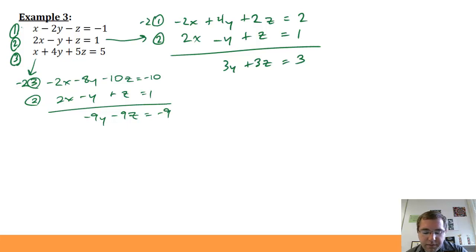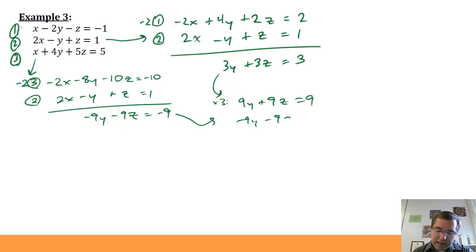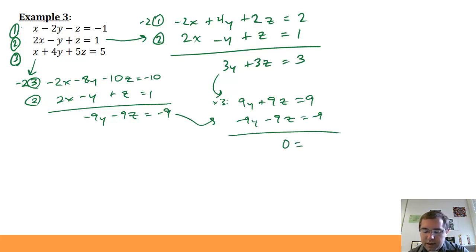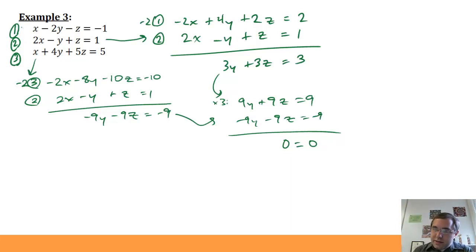Now I have two equations in y and z. I multiply the first by 3 to get 9y plus 9z equals 9, then add it to negative 9y minus 9z equals negative 9. The y's cancel and the z's also cancel, leaving 0 equals 0. Since this is a true statement, I must have infinitely many solutions.